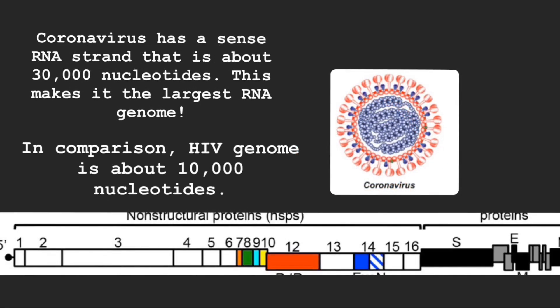Let's talk about the insides of coronavirus. Coronavirus has a single-stranded sense RNA genome. Sense means that it is an infectious genome, meaning the RNA genome alone is sufficient to produce infectious virus particles. The coronavirus genome is about 30,000 nucleotides, making it the largest known RNA genome.